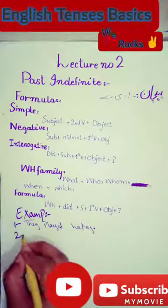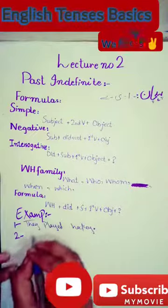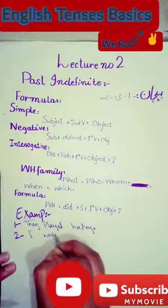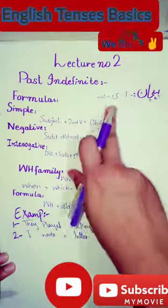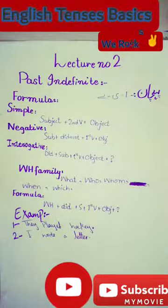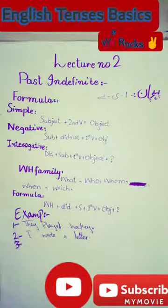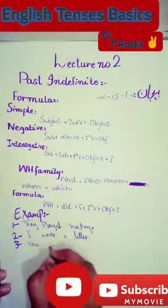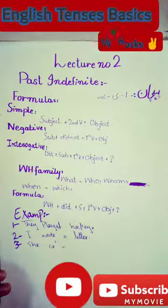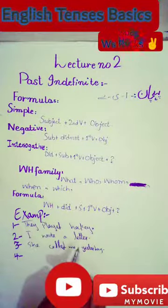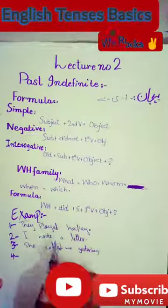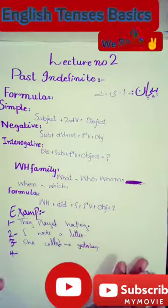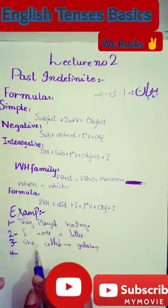Moving to example number two: 'I wrote a letter.' Example three: 'She called me yesterday.' For the simple sentence we have one sentence, and then for practice you should write the negative and interrogative forms in your rough sheets or notes on tenses.